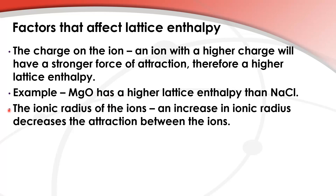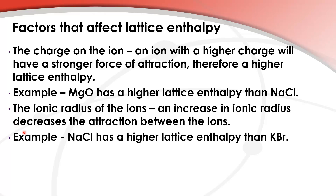The second factor is the ionic radius of the ions. An increase in ionic radius decreases the attraction between the ions. For example, sodium chloride will have a higher lattice enthalpy than potassium bromide. They both have 1+ charges on the cation and 1- charges on the anion.